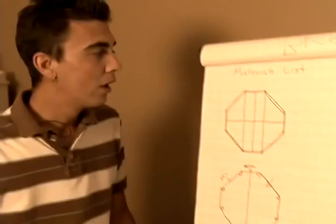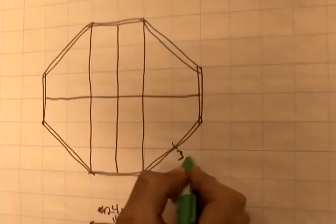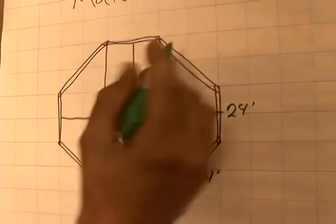We'll start with the two by fours. This is the underside of our base. All these are two by fours. These sides are at thirty-four inches, and these sides are at twenty-four inches.